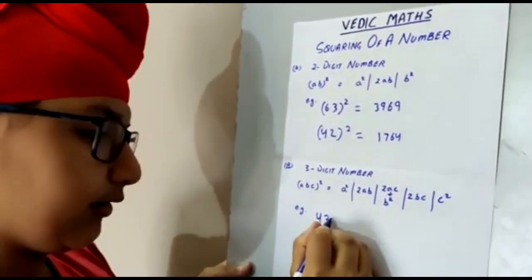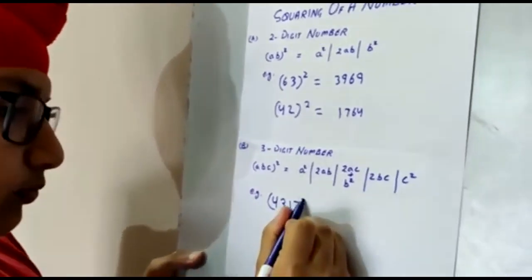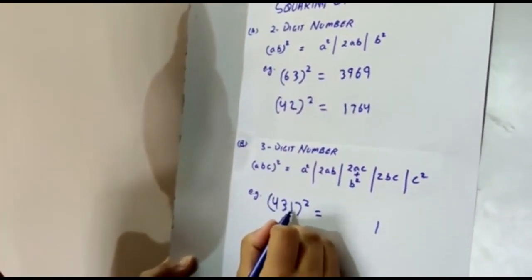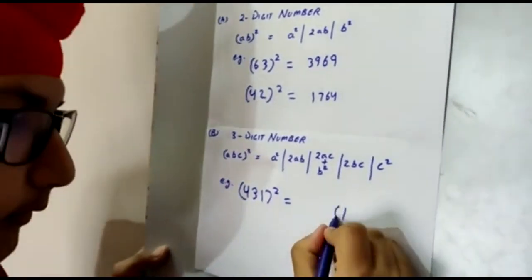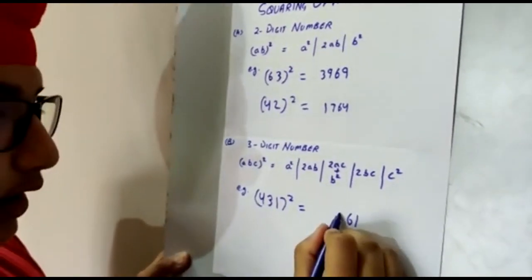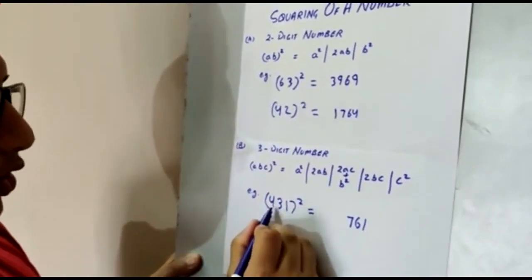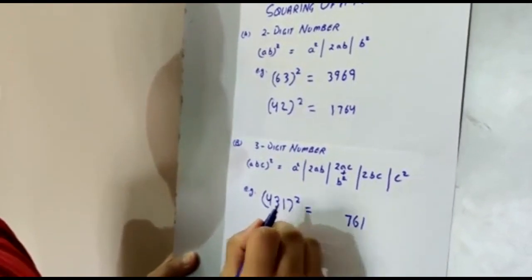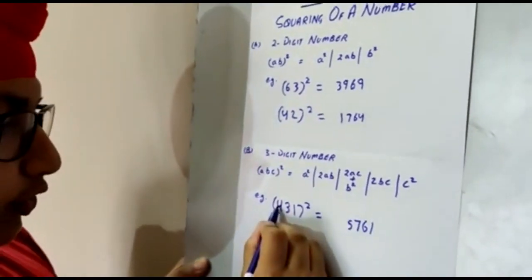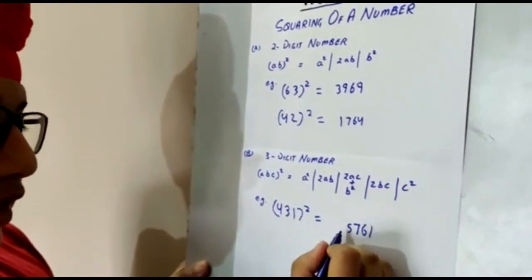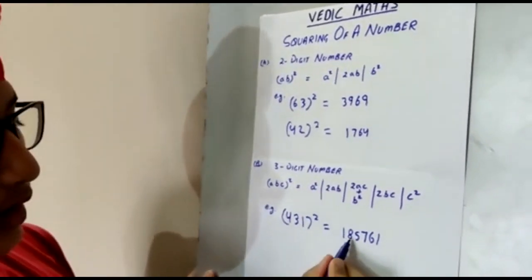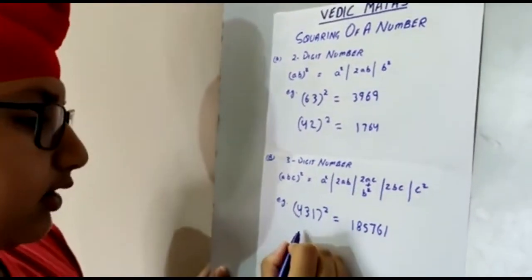For example, 431 square. First we do 1 square which is 1. Then we do 3 into 1 into 2 which is 6. Then we do 4 into 1 into 2 plus 3 square which is 17. We write the 7 and take 1 as a carry. Then we do 4 into 3 which is 12 into 2 which is 24 plus 1 which is 25. We take 2 as a carry and write 5. Then we do 4 square which is 16 plus 2 which is 18. This is the answer for 431 square: 185,761.